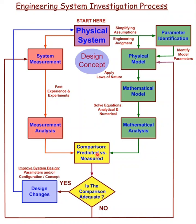But how do we compare our mathematical predictions when we are evaluating a design concept? The design concept does not exist physically. In that case, we have to use past experience and experiments, or create simple experiments to validate questionable aspects of our physical model. Once we have done that, we proceed by making a comparison between predictions and measured results and ask the question: is the comparison adequate? If the answer is yes, then our design concept can be evaluated for its solution to the engineering problem.